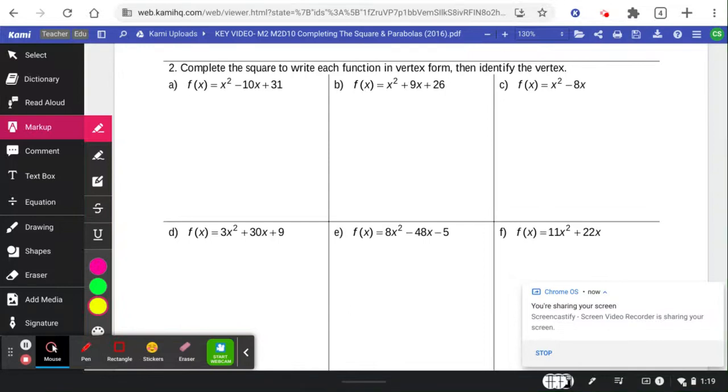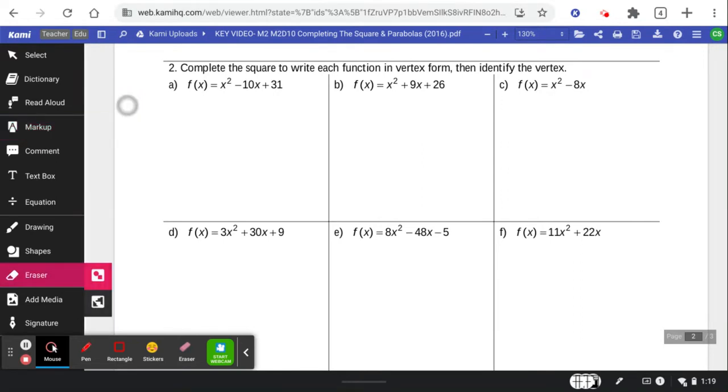All right, here comes the next page of this little homework. Let's see how you do. This is, again, completing the square to write each function in vertex form and then identifying the vertex. So let's see if we're getting faster at this.